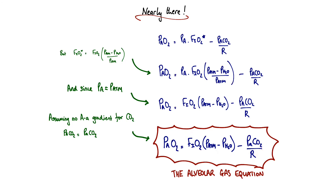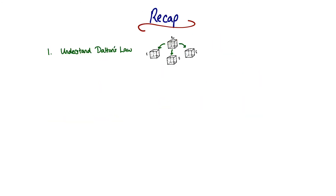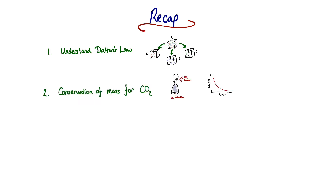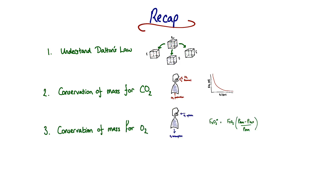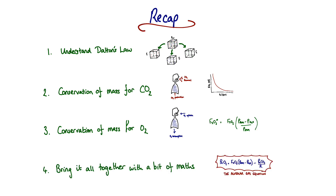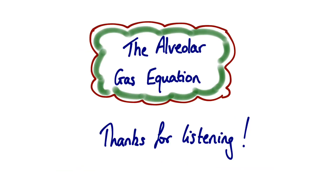The clinical implications and application will be discussed in the next video. To recap: we started with Dalton's law and its implications on alveolar gases; looked at conservation of mass for CO2 and derived the alveolar ventilation equation; made similar arguments for conservation of mass for O2 and described why we needed to correct for humidification in the upper airways; and then put it all together with maths to arrive at the final alveolar gas equation. Thanks very much for listening — I hope that was helpful.